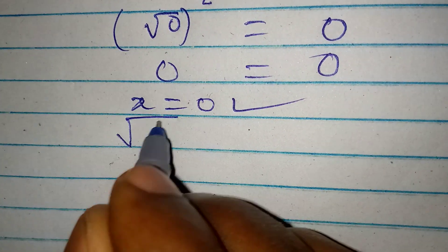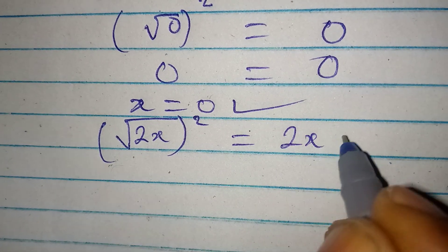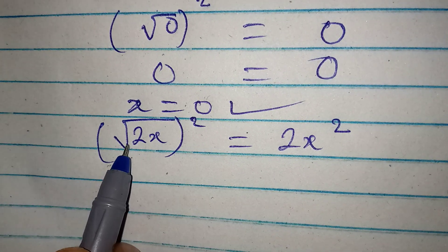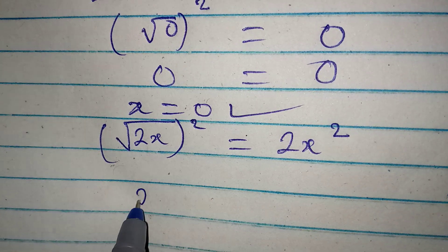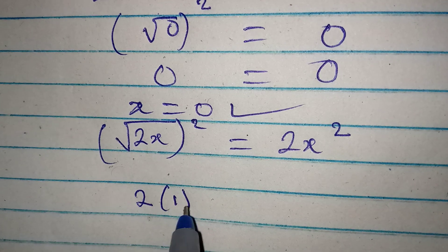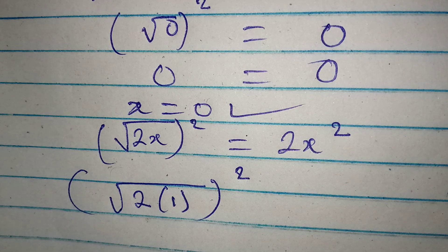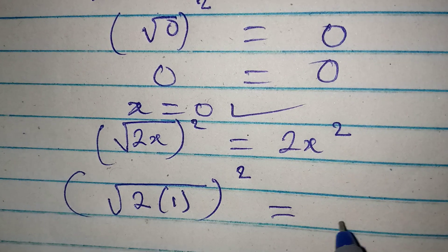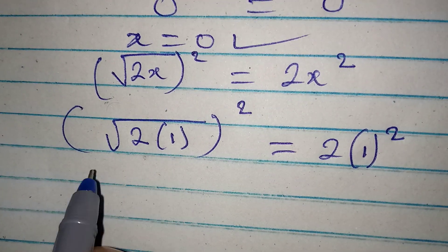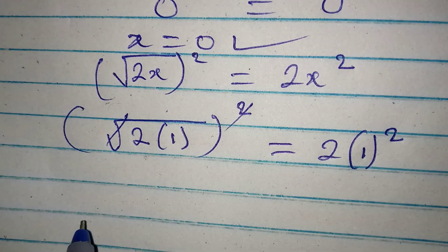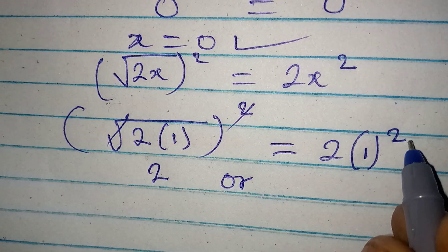Square root of 2x squared equal to 2x squared. Now if we put 1 in there, it means that we have square root of 2 times 1, and then the whole of this is squared, and it's equal to 2 times 1 squared. From here this can just go with this and we have 2 times 1 which is 2.